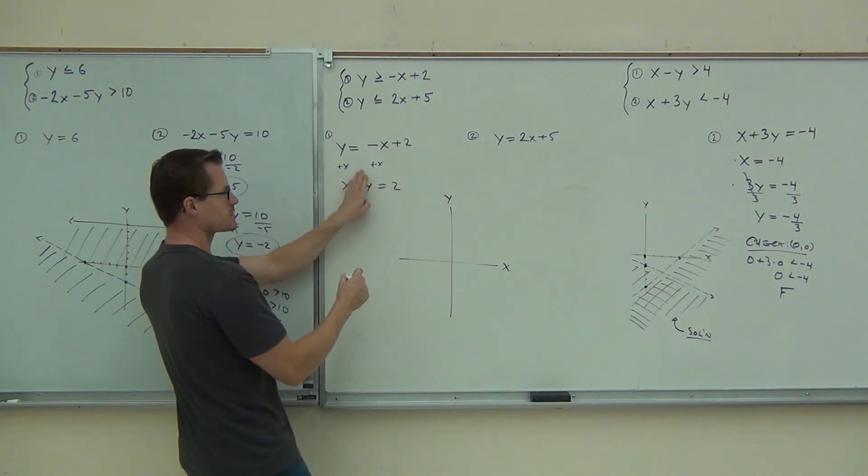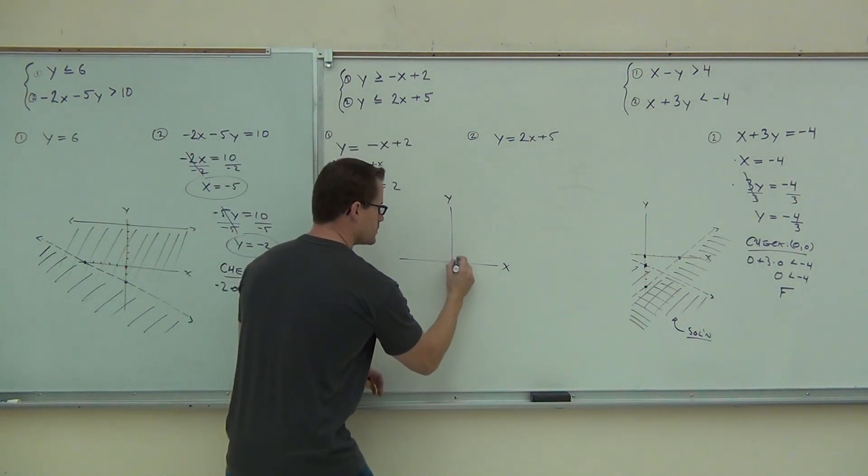If you did cover-up, x is two, y is two, here's one, two, one, two. That would be this line going through...